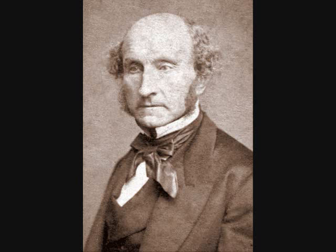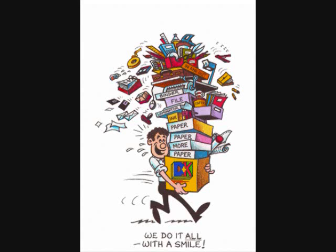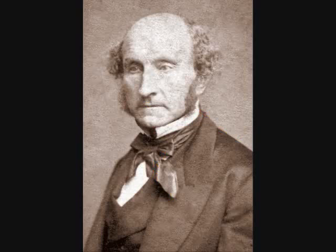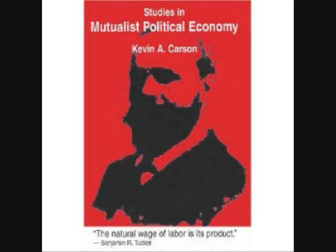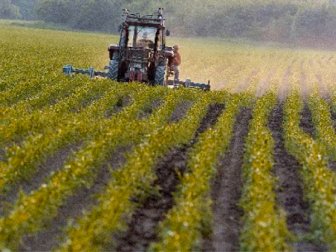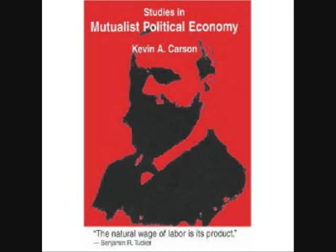Like Smith, Mill divided commodities into three groups based on their reproducibility. In some cases there was an absolute limitation of the supply, owing to the fact that it was physically impossible to increase the quantity beyond certain narrow limits. As examples, he listed the same kinds of commodities as Smith: works of art and produce grown on specific rare types of soil. Other commodities could be multiplied without limit, given the willingness to incur a certain amount of labor and expense to obtain them.